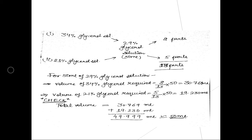For the 34% glycerol solution: 8/13 × 50 = 30.769 ml. For the 21% glycerol solution: 5/13 × 50 = 19.230 ml. To verify the calculation is correct, sum the two volumes: 30.769 + 19.230 = 49.999 ml, which is approximately equal to 50 ml. This confirms the calculations are correct.